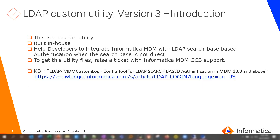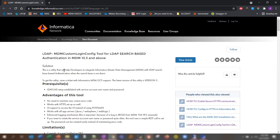This is a custom utility built in-house that helps developers integrate MDM with LDAP search-base-based authentication when the search base is not direct — for example, if you want to authenticate based on an email ID or a SAM account username and the search base is not straightforward. To get the utility files you need to raise a ticket with Informatica GCS Support. There is also a KB article with steps, prerequisites, and setup instructions if you want to review before deciding this is the right utility for you.